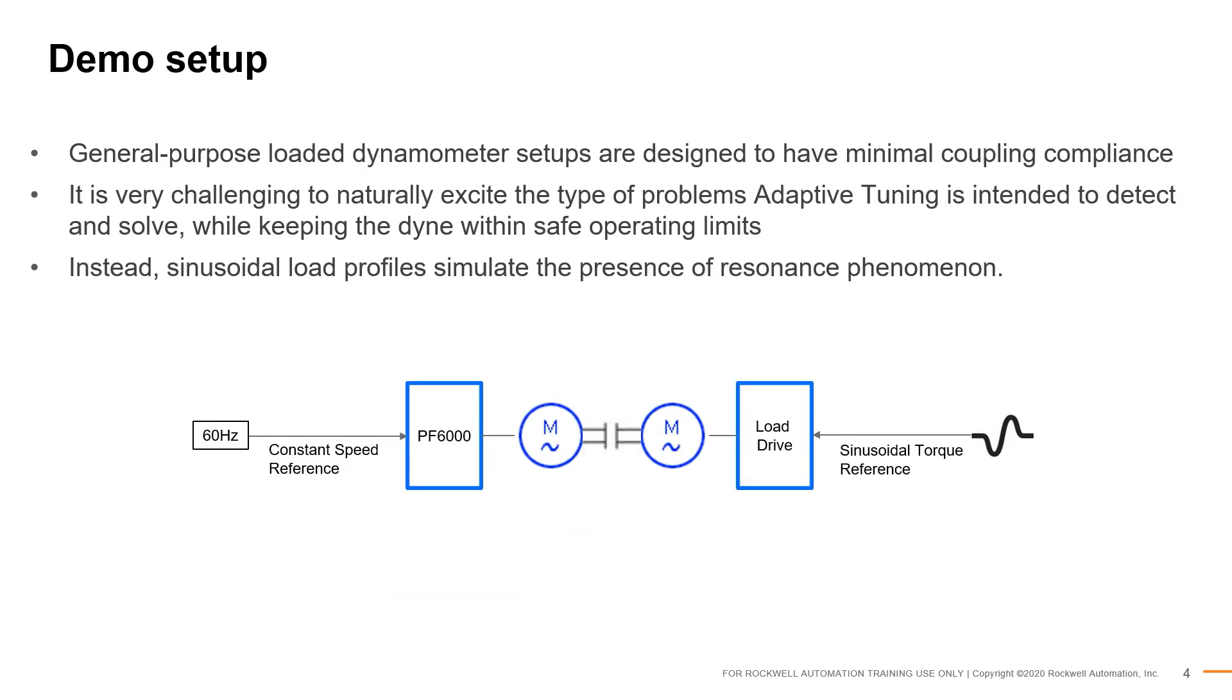Before we continue, let us familiarize ourselves with the test setup. One key challenge in demonstrating Adaptive Tuning in a lab environment is the fact that general purpose dynamometer setups are often overbuilt and carefully calibrated to minimize the impact of coupling compliance or mechanical imperfections. As a result, it is very difficult to naturally excite the type of problems this feature is intended to detect and solve. Therefore, for demonstration purposes, frequency components symptomatic of undesirable system tunes are simulated by injecting sinusoidal loads.